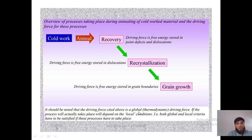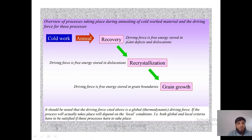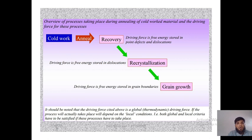The driving force cited is a global thermodynamic driving force — we supply thermodynamic energy in terms of temperature, causing atoms to move. Whether the process actually takes place depends on local conditions; both global and local criteria must be satisfied. If point defects and dislocations are present and temperature is applied, recovery occurs. If dislocations are present and thermodynamic conditions are provided, recrystallization occurs. After recrystallization, further thermodynamic temperature causes grain growth.